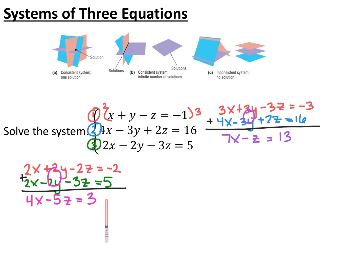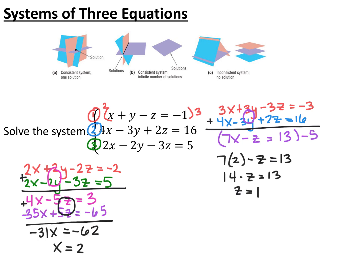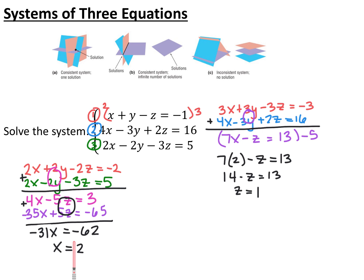Adding that to equation three, 2x minus 2y minus 3z equals 5, the y is eliminated again, giving 4x minus 5z equals 3. Now with the two-variable system — 4x minus 5z equals 3 and 7x minus z equals 13 — I solve by elimination. I multiplied the purple equation by negative 5, getting negative 35x plus 5z equals negative 65, and added it to 4x minus 5z equals 3. The z's cancelled, leaving negative 31x equals negative 62, so x equals 2.